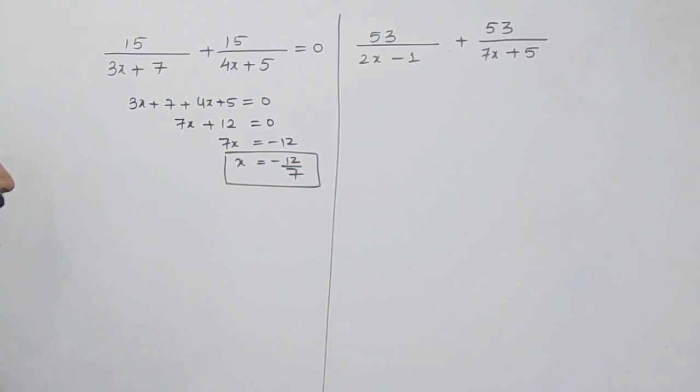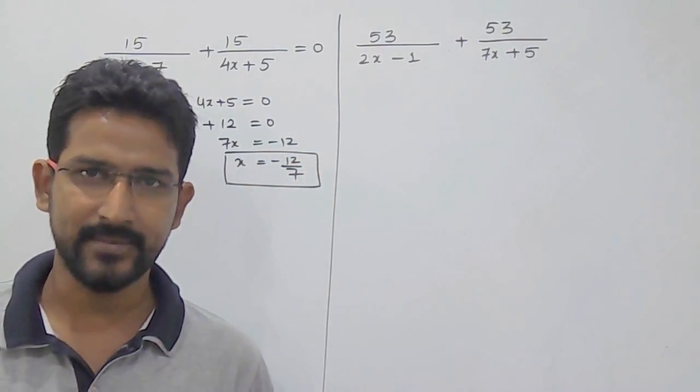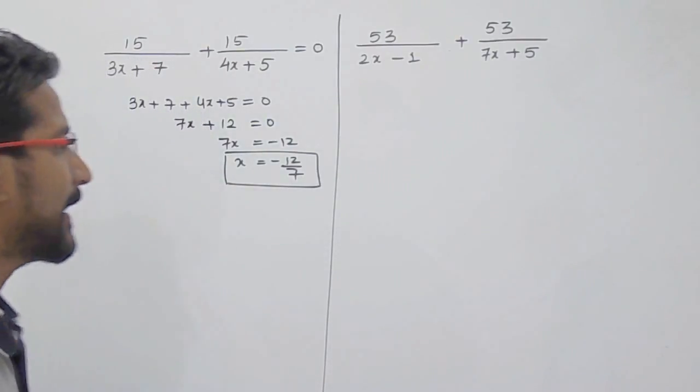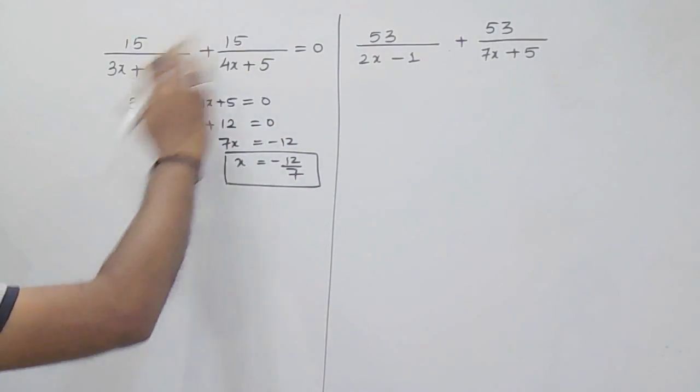So your answer will be minus 12 by 7. Just you have to add the denominator and equate with 0. Don't do any cross multiplication here.